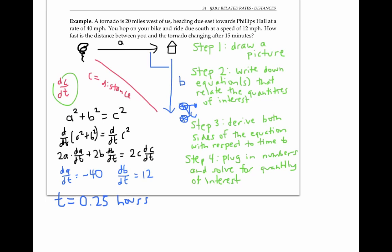The tornado starts 20 miles away, but it's moving at a rate of 40 miles per hour, so after a quarter of an hour, it's gone 10 miles. That means after a quarter of an hour, it's only 10 miles away. And so at the time of 0.25 hours, a equals 10. The bike is moving at 12 miles per hour, so after a quarter of an hour, it's gone three miles. And so at this time, b equals three.